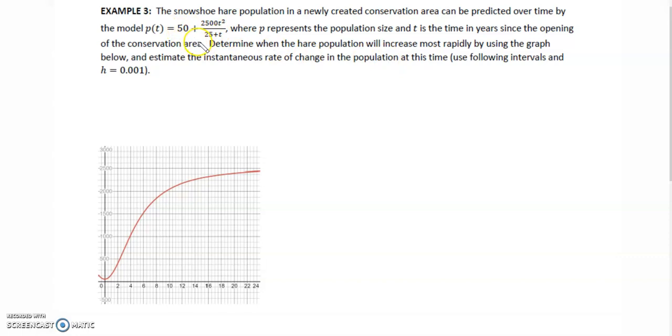Example 3: The snowshoe hare population in a newly created conservation area can be predicted over time by this model. P represents the population size and t is the time in years since opening the conservation area. Determine when the hare population will increase most rapidly by using the graph below and estimate the instantaneous rate of change.